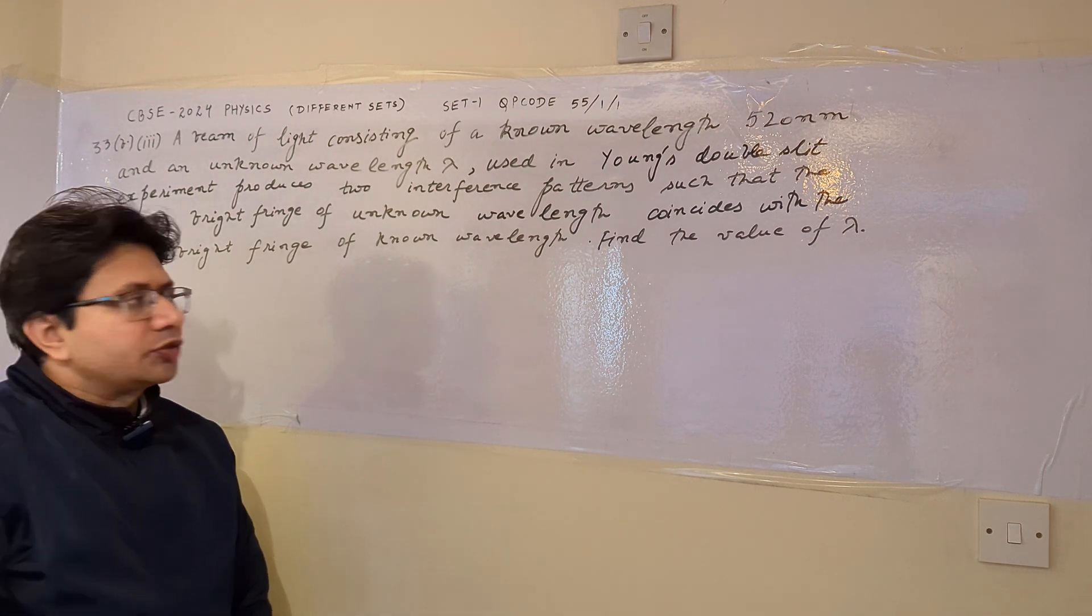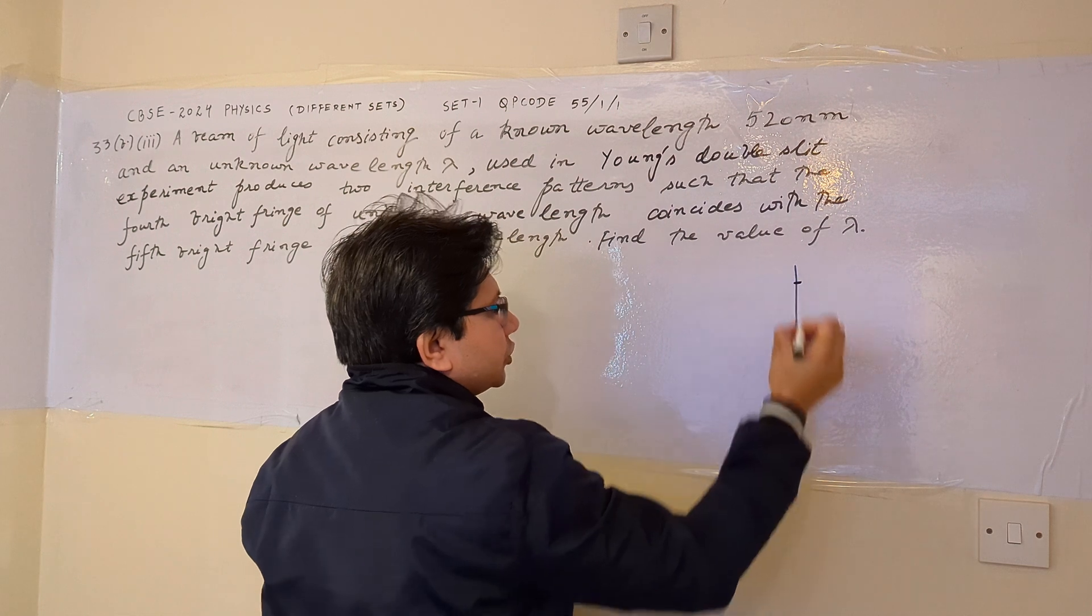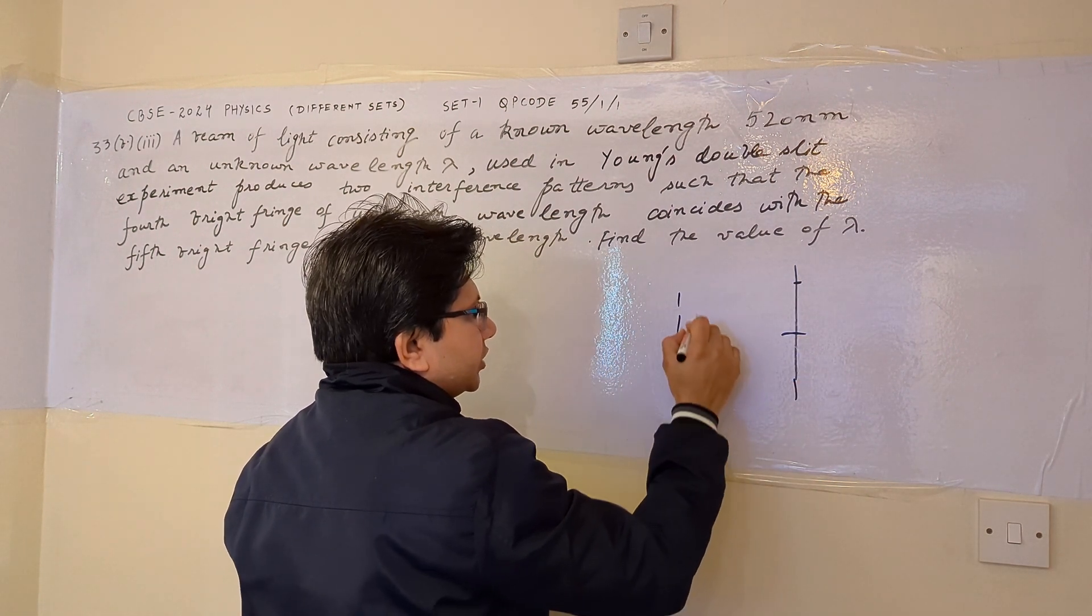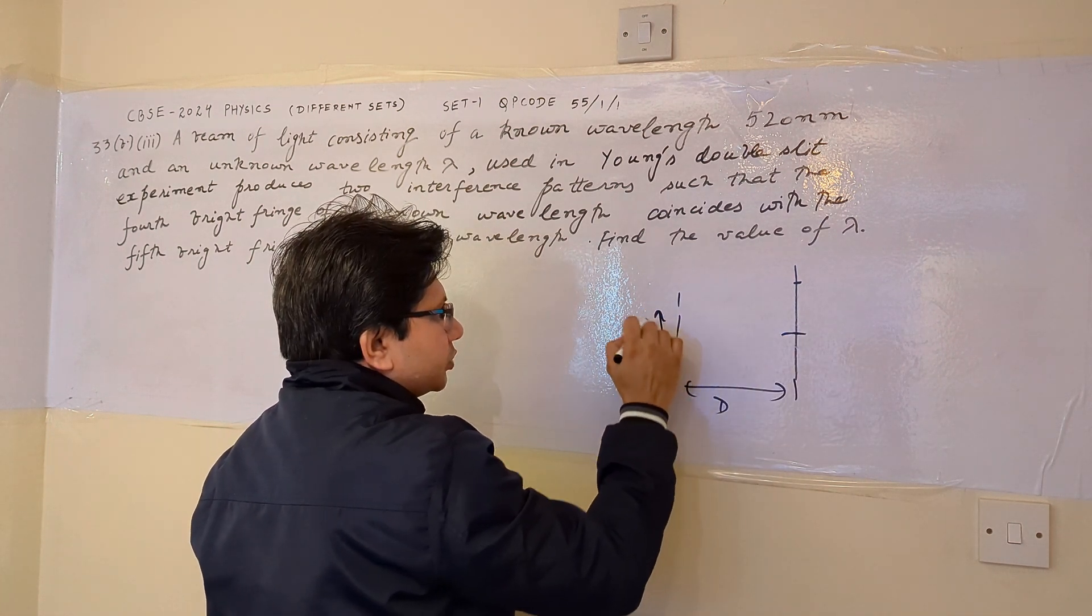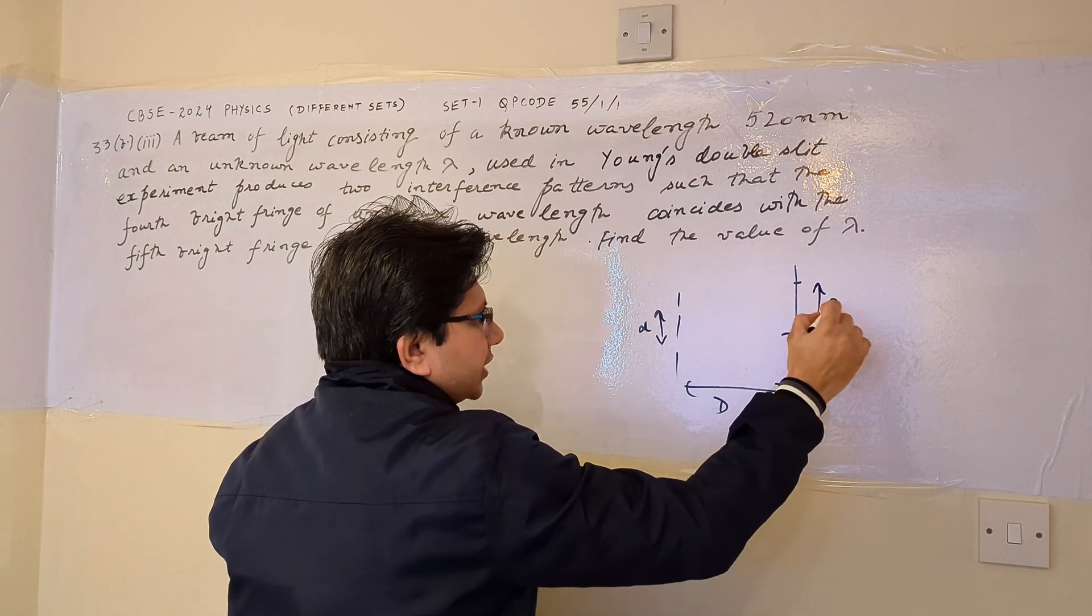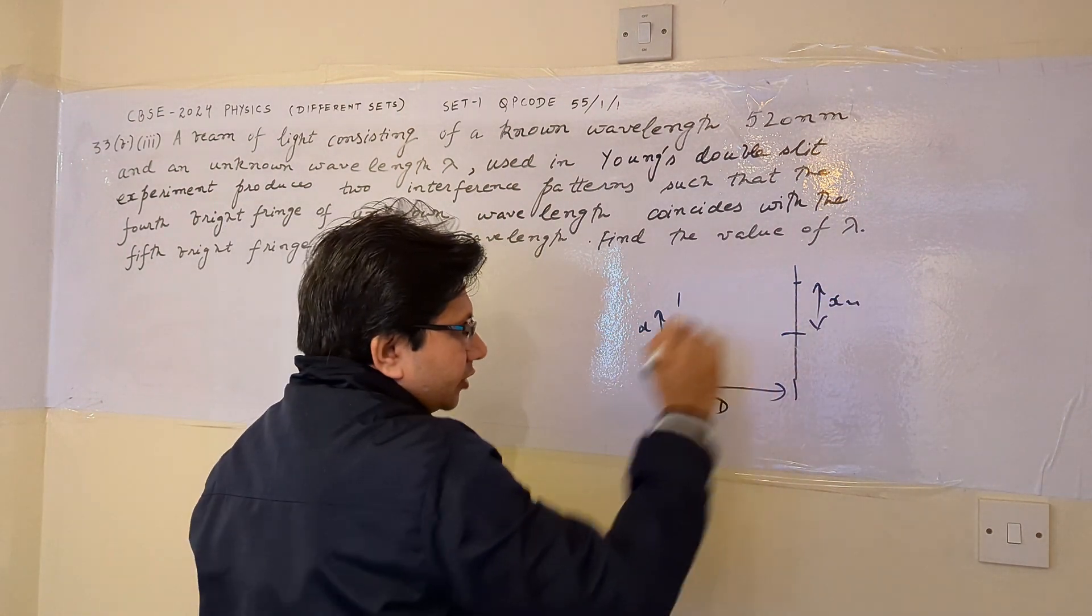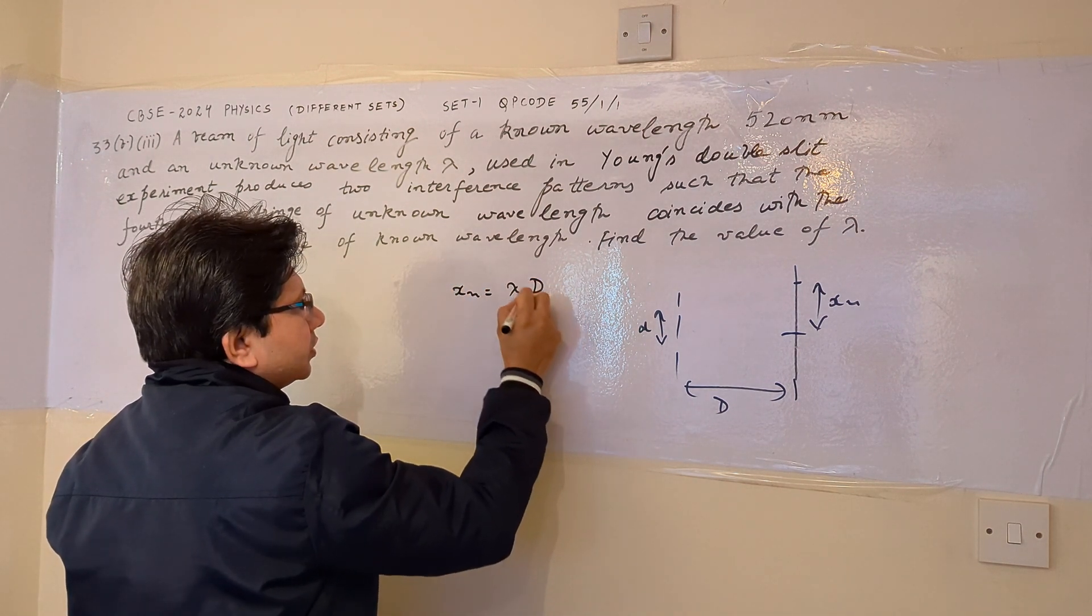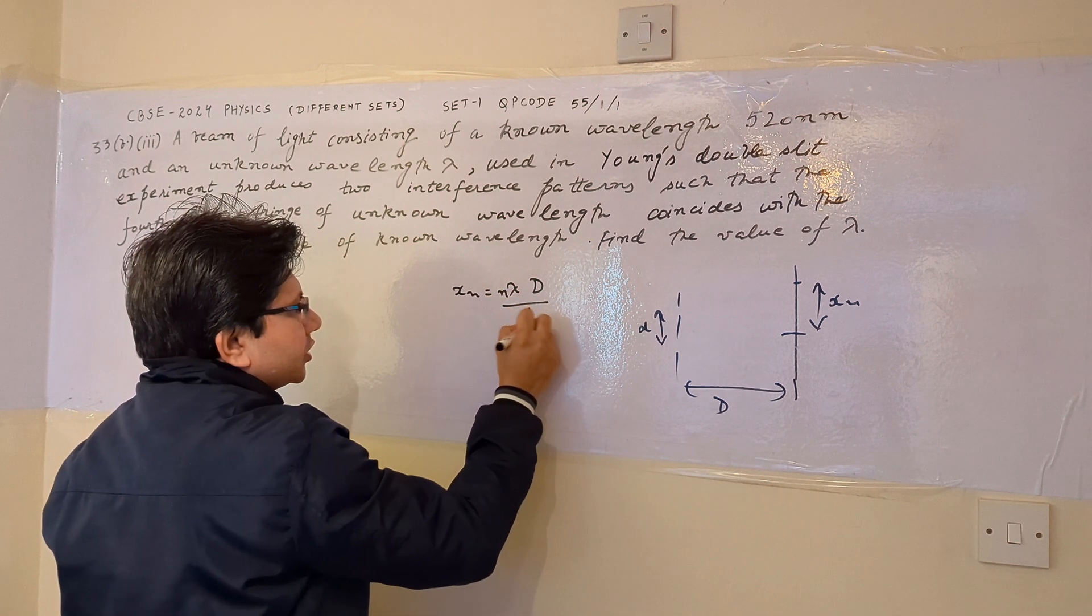and the basic concept which is used here is the distance of the bright fringe from the center. For example, there are the slits, this is the distance between the slits and the screen, small d is the distance between the slits and this is xn. xn is the distance of the bright fringe from the center. So xn is given by the formula n lambda capital D by small d.